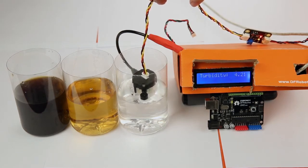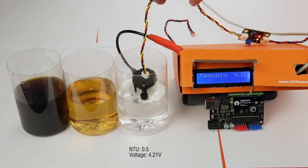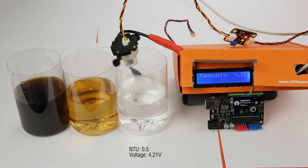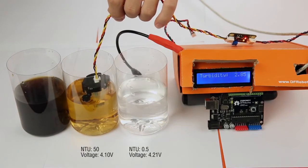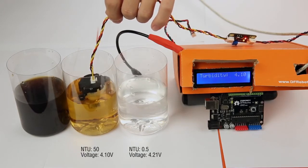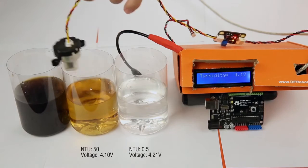Clear water with NTU less than 0.5 gives us a voltage around 4.1 volts. The larger the turbidity is, the smaller this output voltage will be. The voltage ranges from 0 to 4.5 volts.